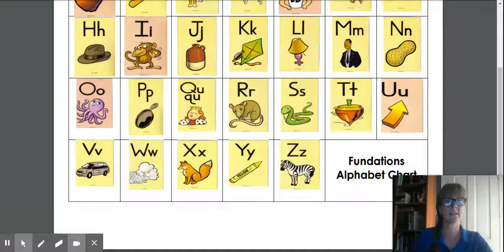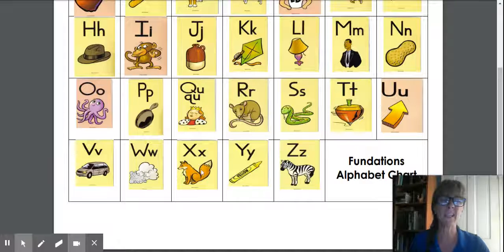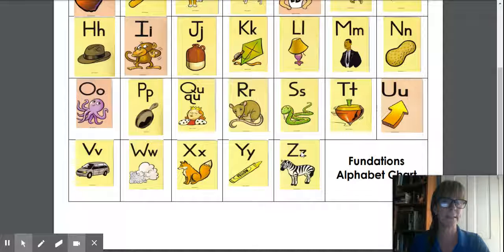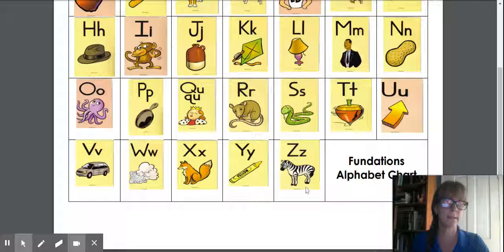It basically is really a K and S sound together. But so, X, Fox, X. Y, Yellow, Y. And Z, Zebra, Z.